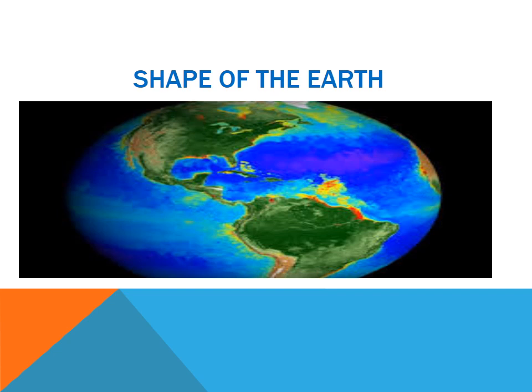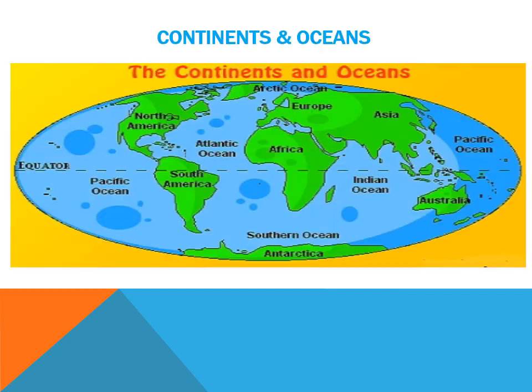Children, as we all know, the earth is divided into continents and oceans. A continent is one of several very large land masses, generally identified by convention rather than any strict criteria. Up to seven regions are commonly regarded as continents.